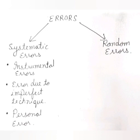Next is error due to imperfect technique. Sometimes the technique used for measurement is not correct, which causes some mistake in the reading. For example, to determine the temperature of a human body a thermometer must be placed under the armpit, but the reading obtained is slightly lower than the actual temperature — so that is not the correct technique.